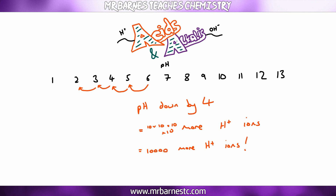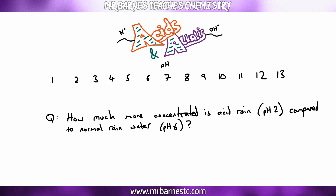A typical exam question might be: how much more concentrated is acid rain with a pH of 2 compared to normal rainwater with a pH of 6? Find the difference in pH — it's gone down by 4 — so that's 10 × 10 × 10 × 10. Put that into your calculator and it comes out to 10,000 times more concentrated.